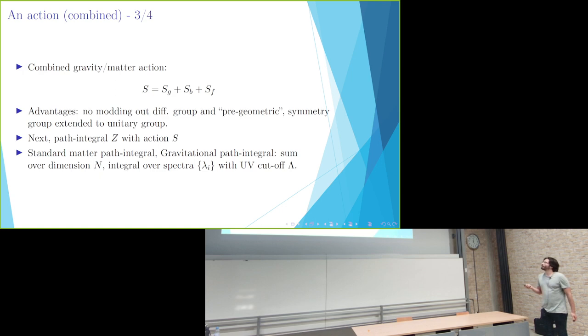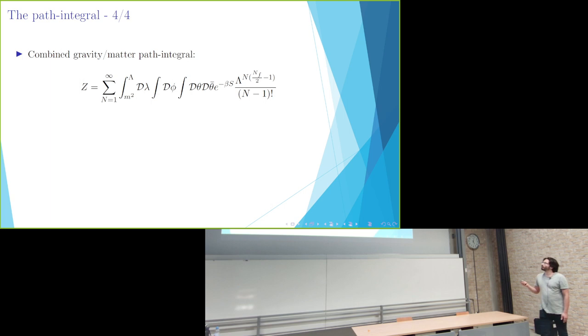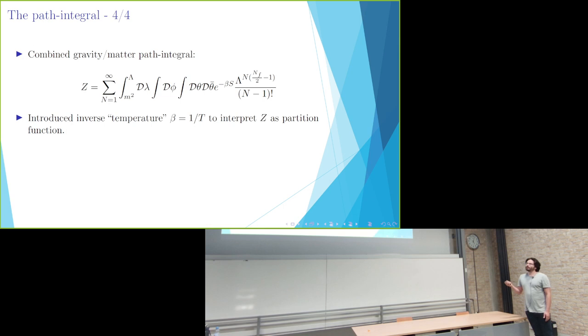So as I promised you, with this we constructed a path integral with this action. For the matter sector, we just use a standard path integral. And for the gravitational path integral, we will sum over the configuration space of the degrees of freedom that we chose here: over the Hilbert space dimensions N, and over all possible spectra that are present in these actions, with the given UV cutoff. This would look like we have here the path integral over the Grassmann variables, here over the bosonic variables, here over all possible spectra, and here as a sum over the integer Hilbert space dimensions.